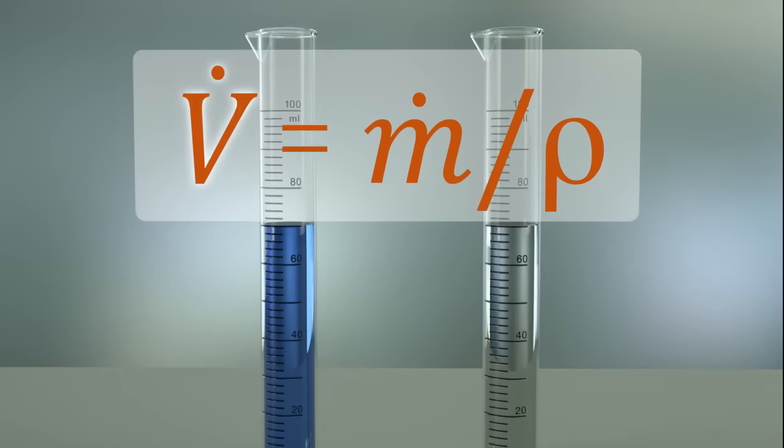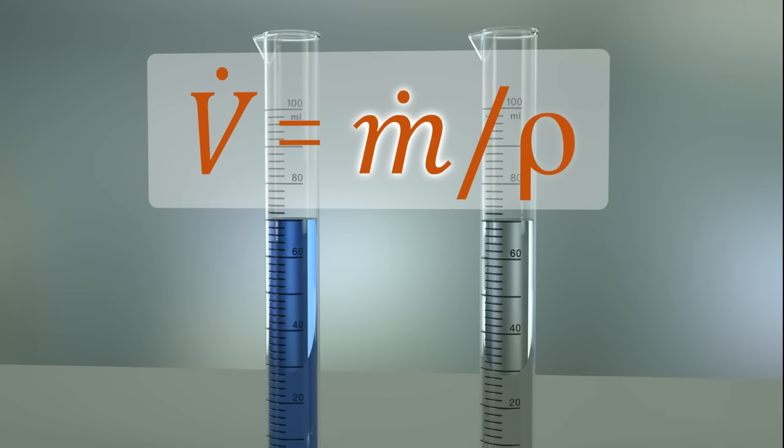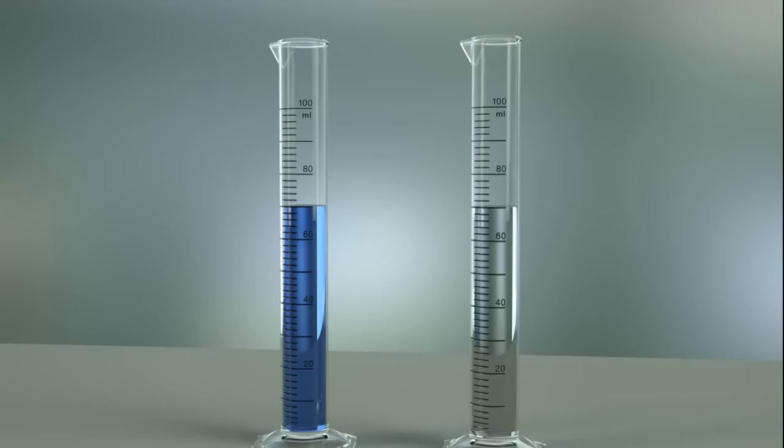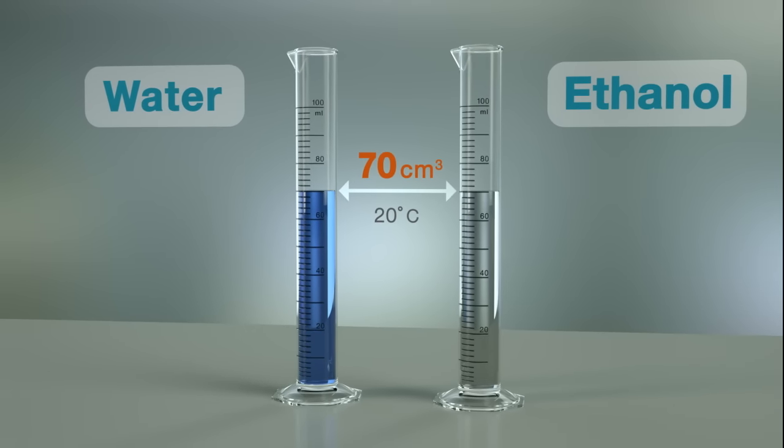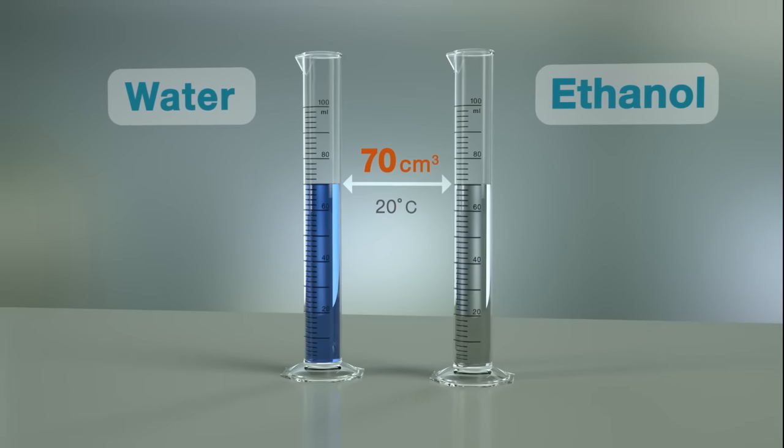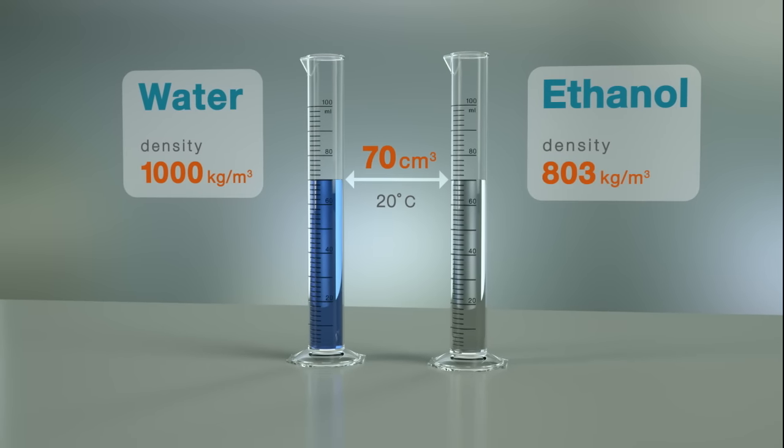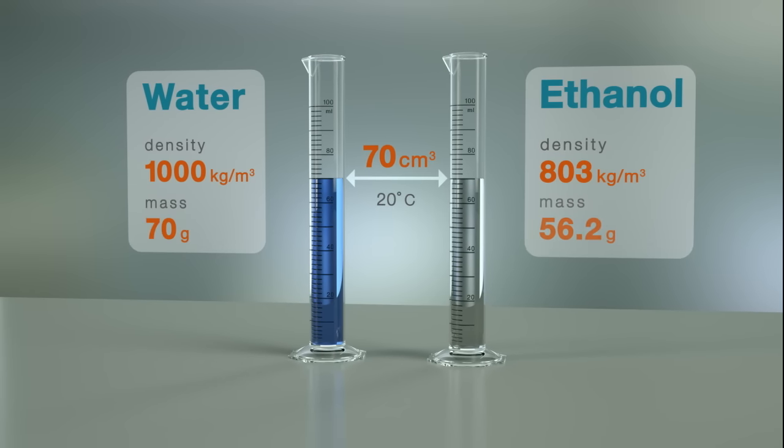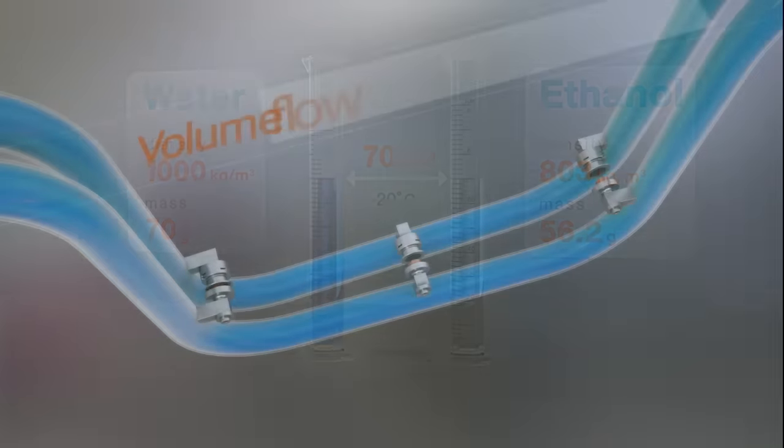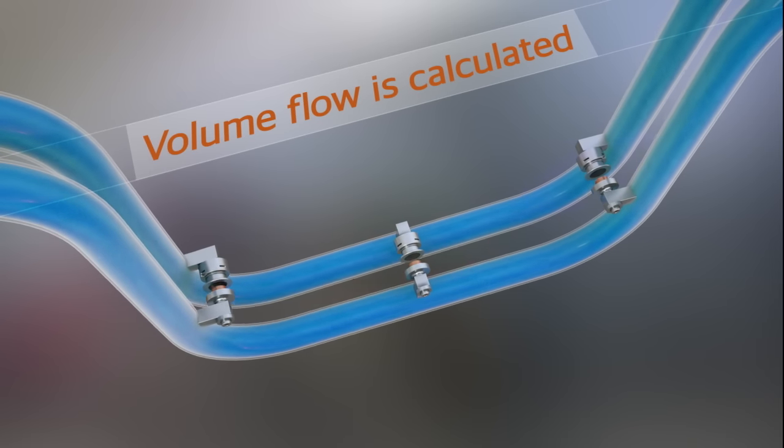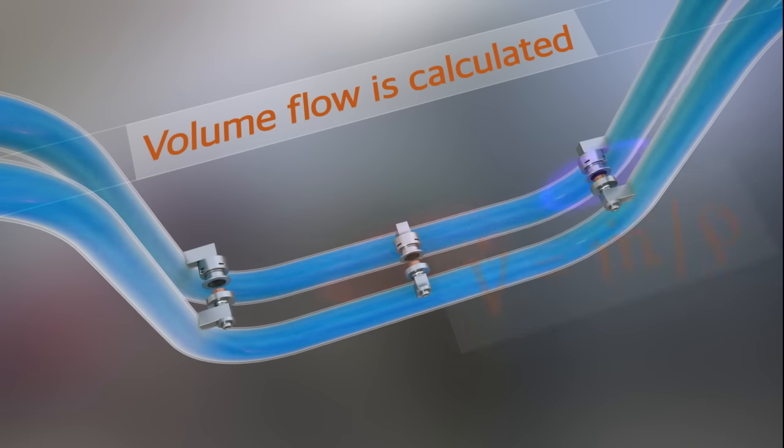Liquid volume flow is derived from the mass flow and density measurements already acquired. As in this example, fluids can have the same volume but different densities and masses. The mass and density measurements allow the calculation of the volume flow.